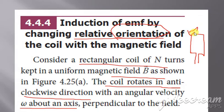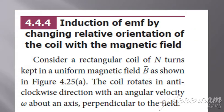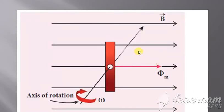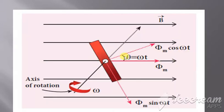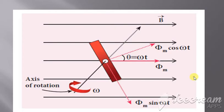When rotating in the anti-clockwise direction, the coil makes an angle theta, where theta is given by omega t. So theta equals omega t, and the flux phi equals phi_m times cos(omega t), because phi is split into two components. We take only phi_m times cos(theta).